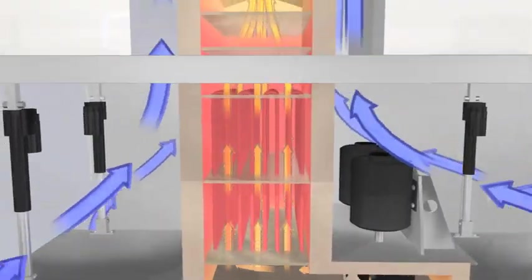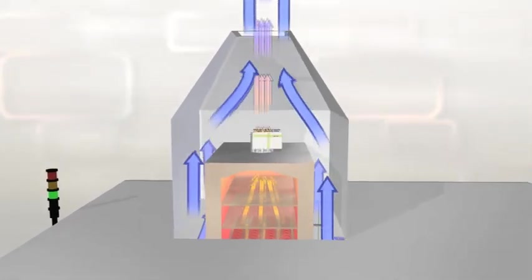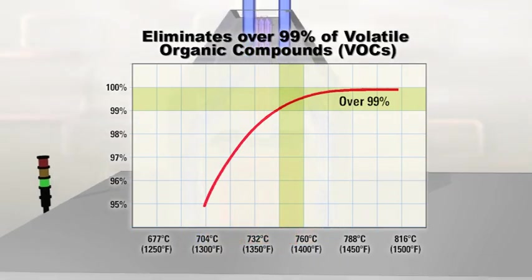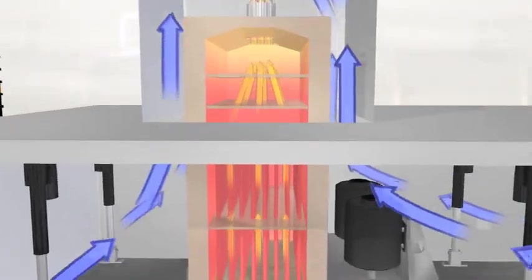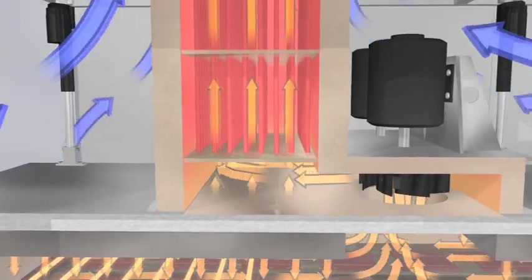This provides maintenance-free VOC abatement and ensures that the chamber remains free of contaminants. The VOC thermal oxidizer attaches directly to the dryer, eliminating any chance of condensation.